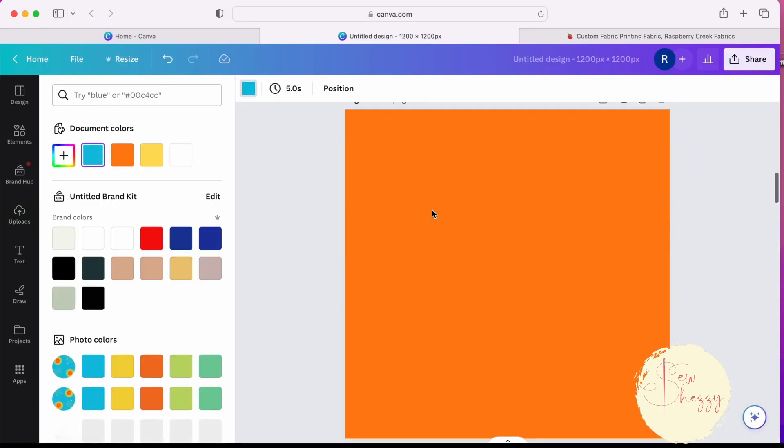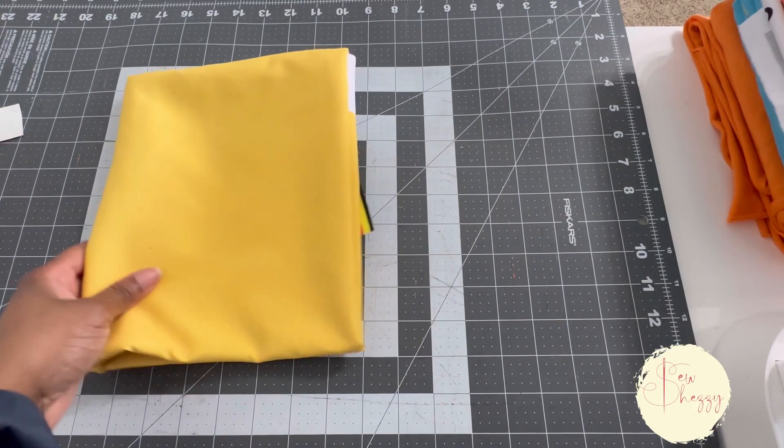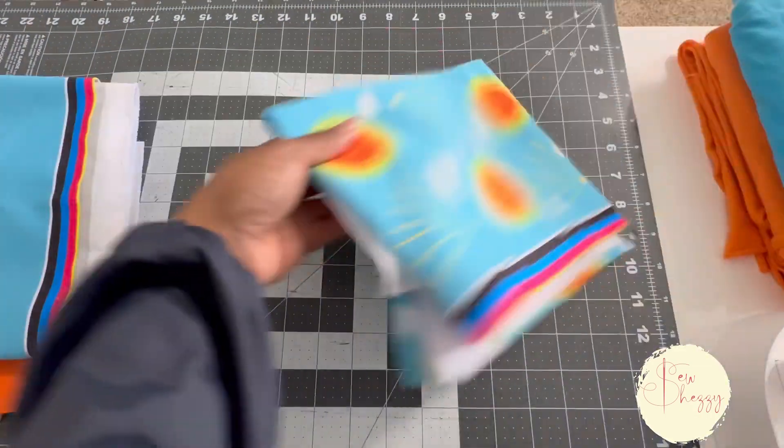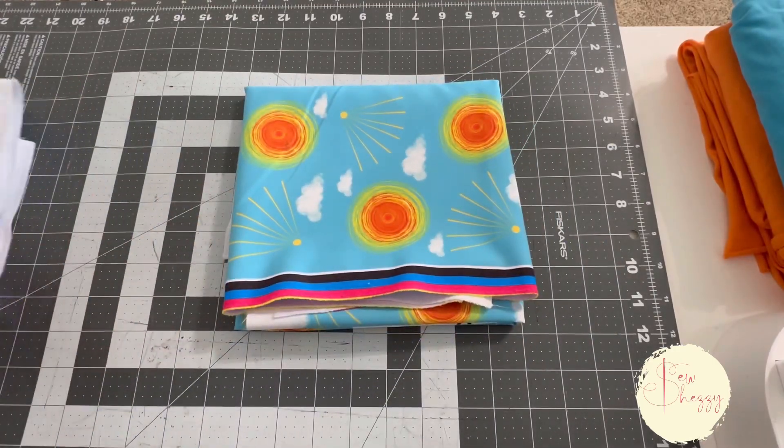I also went back to Canva and used the three colors in the print to make solids for a color block. And here is the result: beautiful vibrant fabric on board short material, and I can't wait to show you guys what I made.